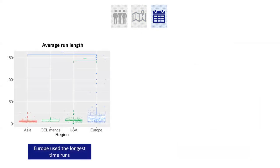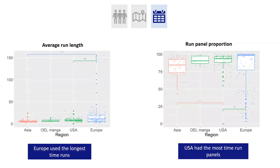For time runs, these had the longest run lengths, between 11 and 12 panels. Here it was European comics that used the longest time runs. American comics had the most panels part of a time run, also about 85%, similar to spatial locations.